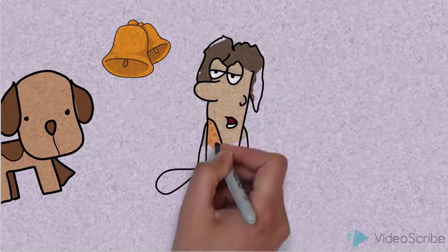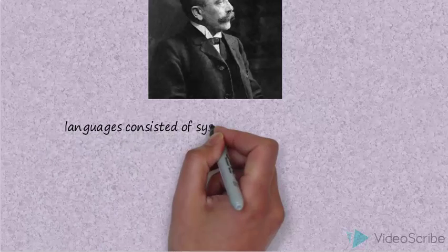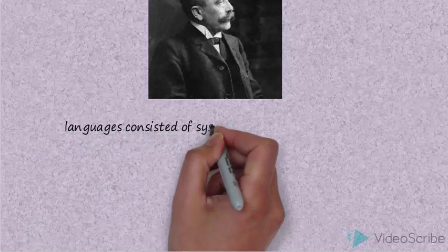He adopted the concept of language structure from Ferdinand de Saussure. He said that languages at all times consisted of systems of interrelated elements: lexical, grammatical, and phonological.